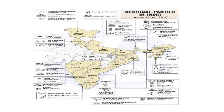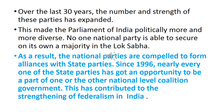Whenever a new party is formed at the regional level, it may have formed from regional issues or regional problems. Once their problems are settled, history shows that some parties disappear and new parties come up. Over the last 30 years, the number and strength of regional parties has expanded. No single party has been able to secure its own majority in the Lok Sabha election after 1991. As a result, national parties are compelled to form alliances with state parties. Since 1996, nearly every state party has got an opportunity to be part of one or another national-level coalition government, contributing to the strengthening of federalism in India.